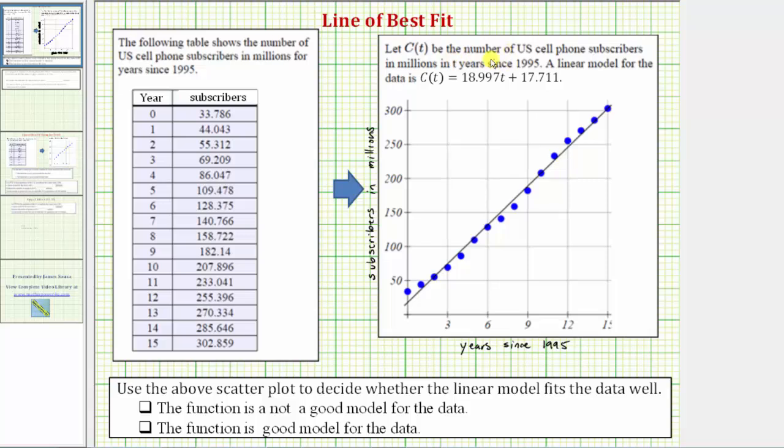We're told to let c(t) be the number of US cell phone subscribers in millions t years since 1995. A linear model for the data is given by c(t) = 18.997t + 17.711, and c(t) is graphed here in black.